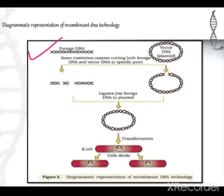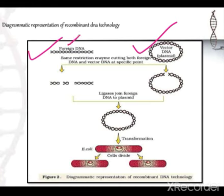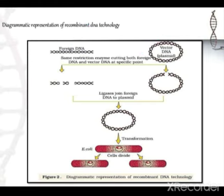Here is our foreign DNA. Foreign DNA we call desired DNA or target DNA, which we isolate from the organism which we want to transfer to a new host. Then here is our vector DNA. So our first step is isolation of this foreign DNA and vector DNA.